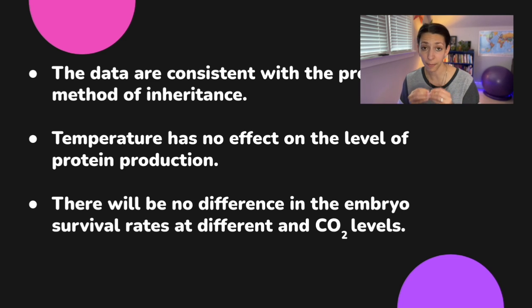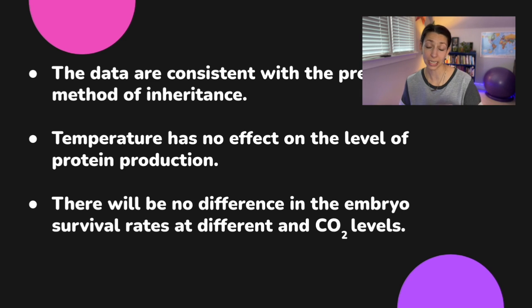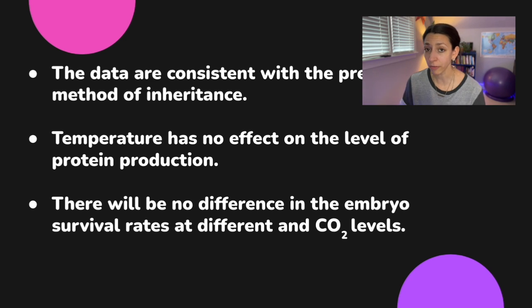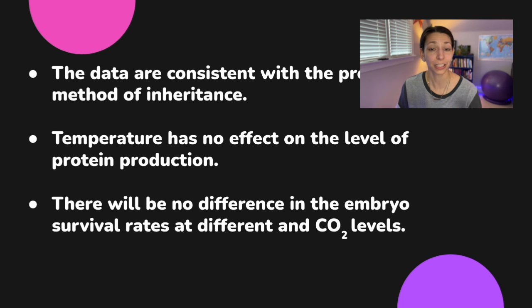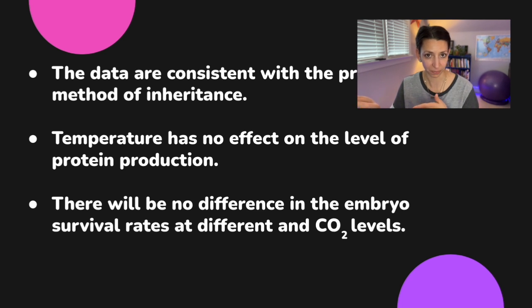In an alternative hypothesis, you state that there will be an effect of the independent variable. For example: there will be a decreased survival rate in embryos at higher CO2 levels. That's an alternative hypothesis for that same experiment.